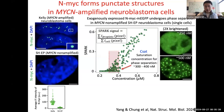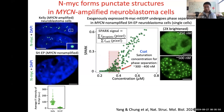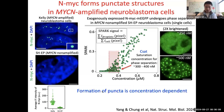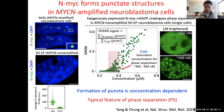We tagged MYC with GFP and expressed it in a type of neuroblastoma cell called SHAP that has no endogenous MYC. We found that above a threshold concentration, MYC forms droplets, but below that threshold, MYC is evenly distributed in the nucleus. This punctate formation is concentration-dependent, which is the typical feature of phase separation.